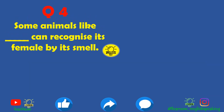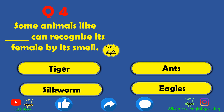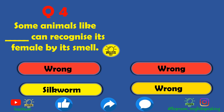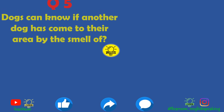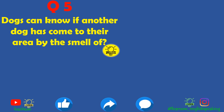Question number four: some animals can recognize their female by smell. Which animal does this? Tiger is wrong, ants is also wrong, eagles is also wrong. The correct answer is silkworm — the male silkworm can recognize the female by its smell.